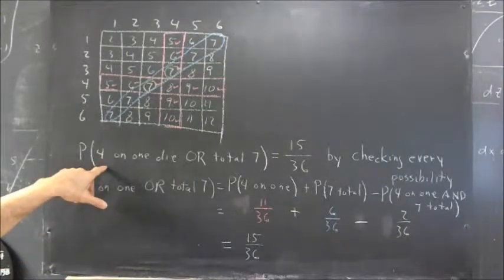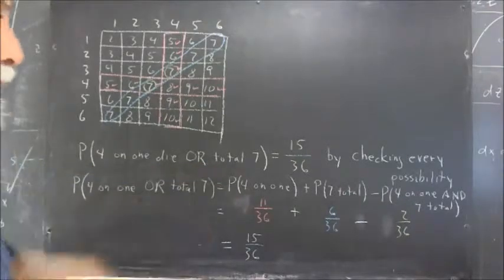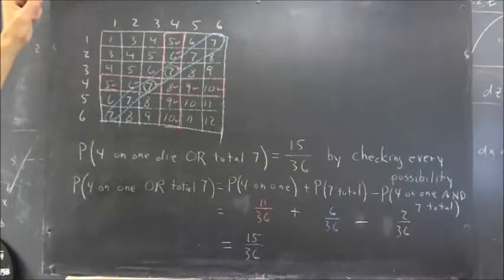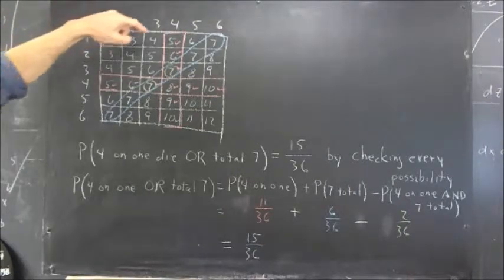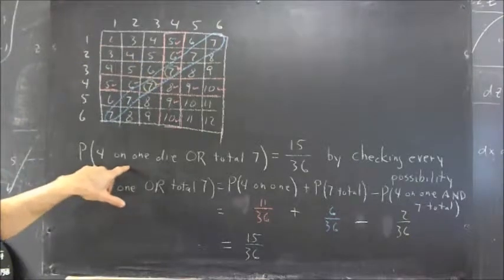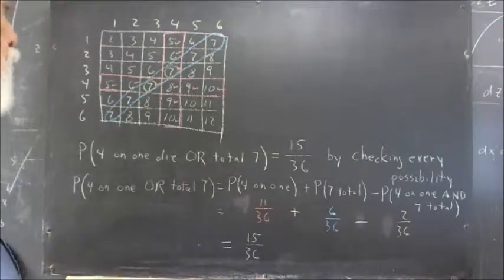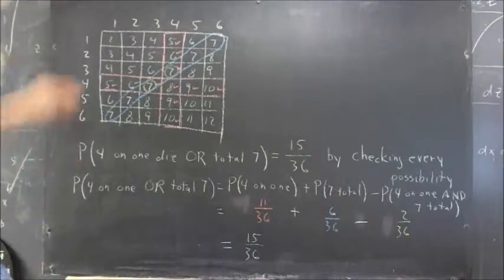Now, probability of 4 on one die or a total of 7. We can go through the whole space and determine whether each of the 36 possibilities fulfills one of these conditions or the other.